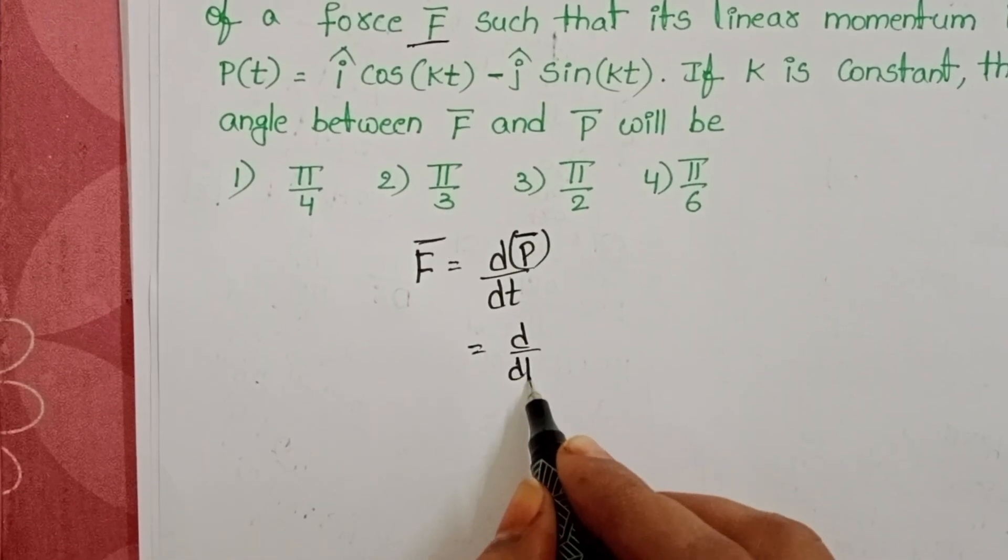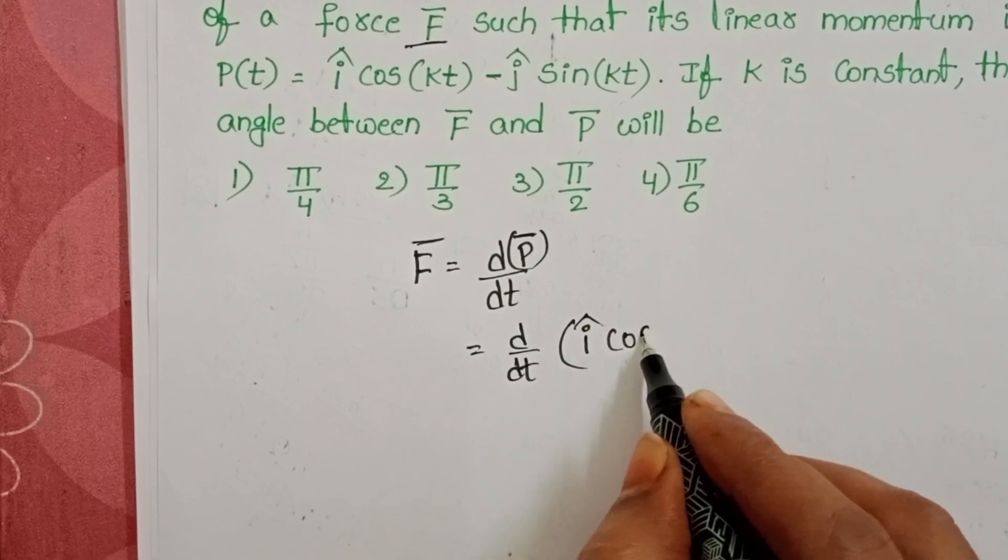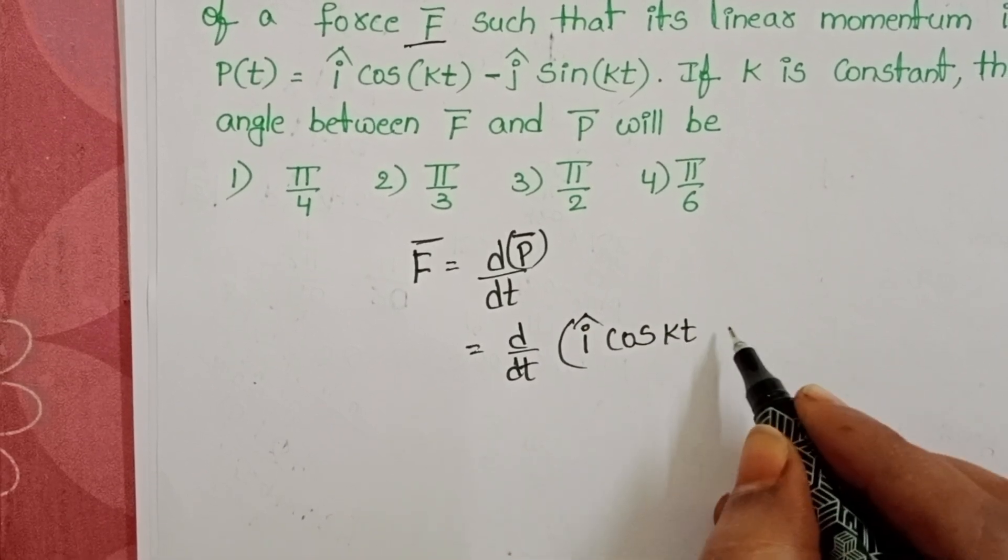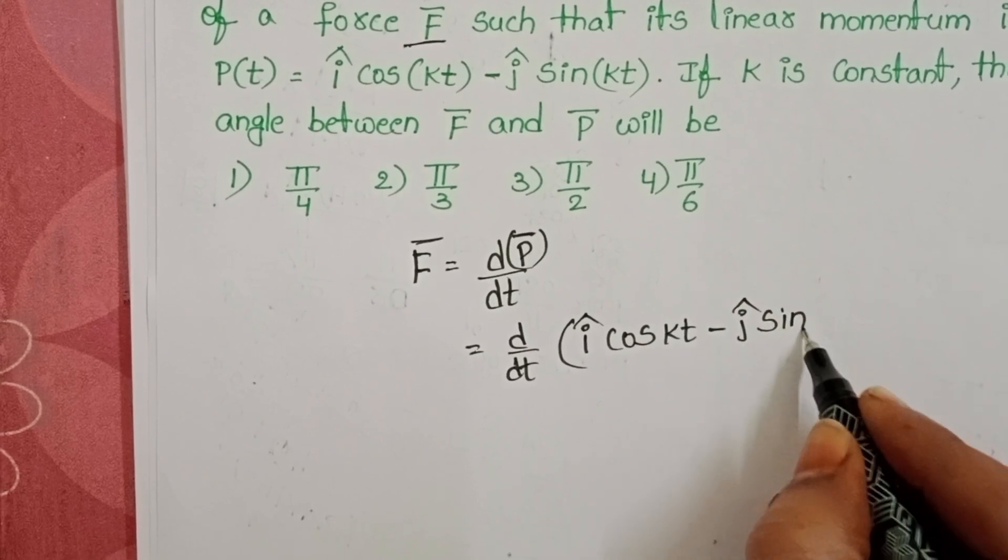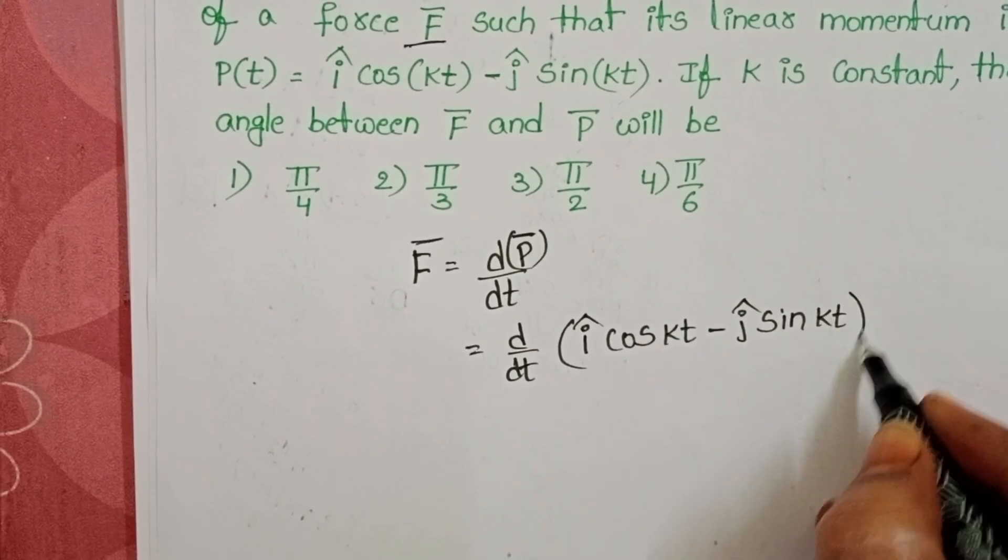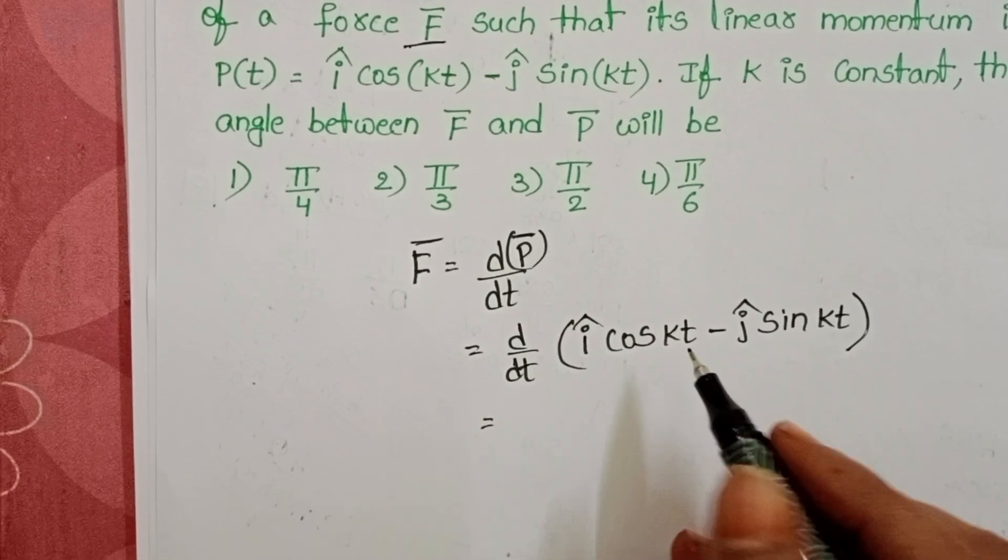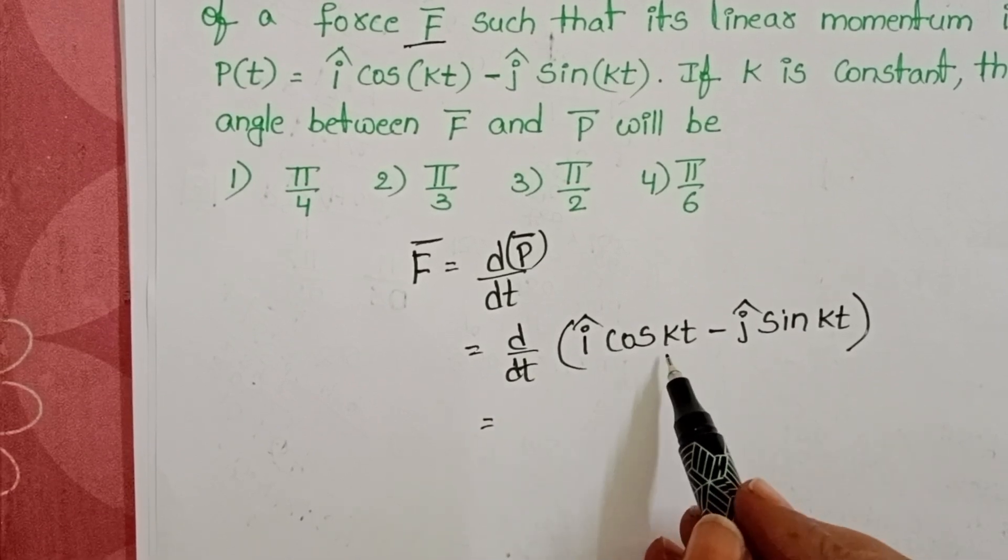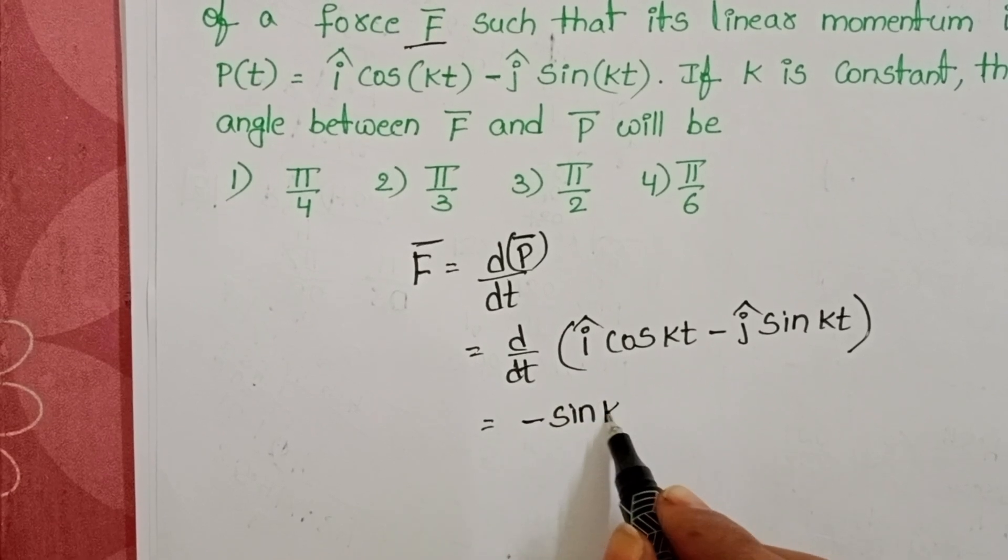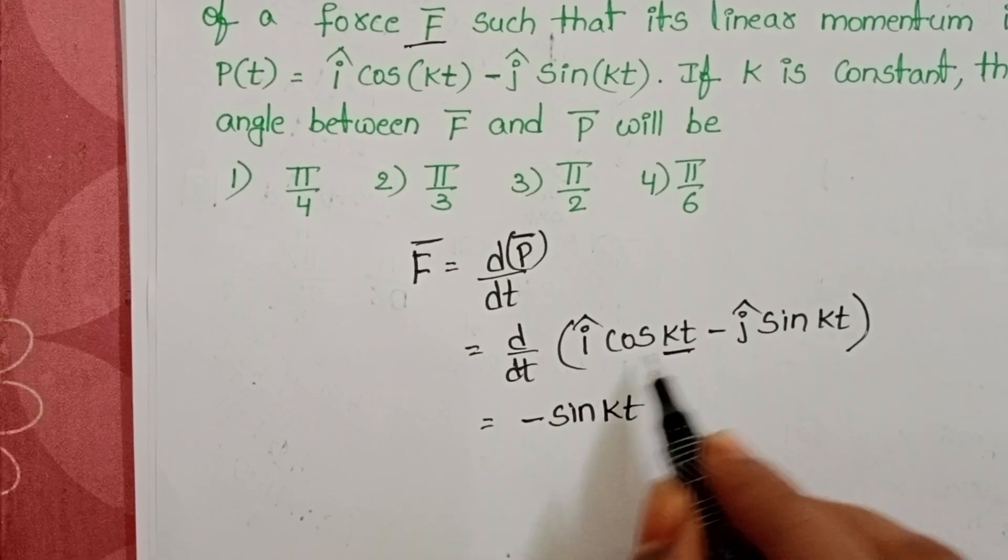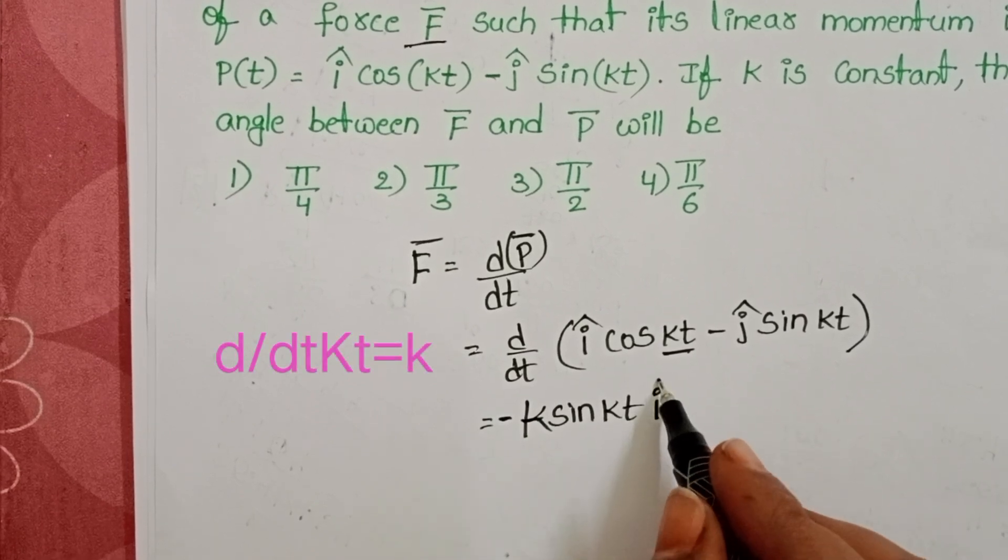D by DT of I cap cos KT minus J cap sin KT, where K is constant. D by DT of cos KT, differentiation of cos becomes minus sign. Again, differentiate KT.